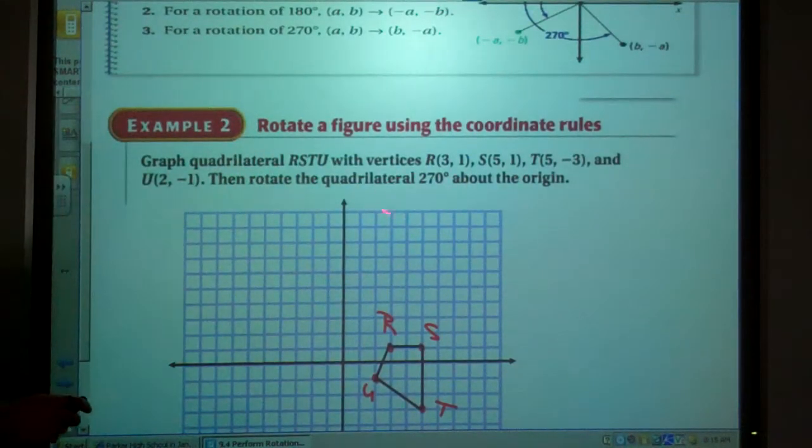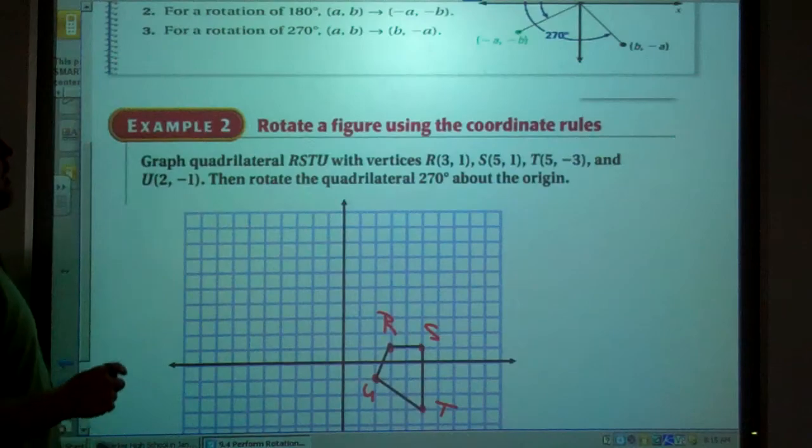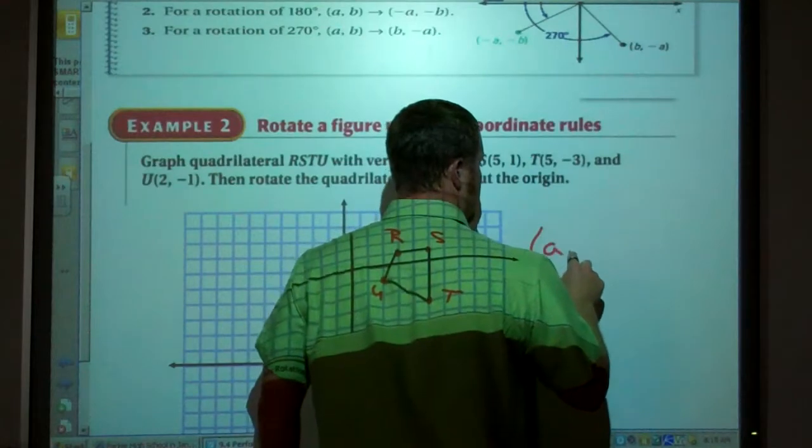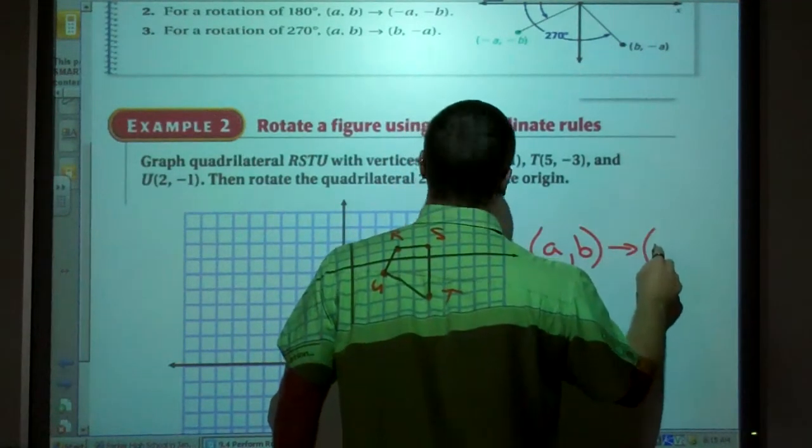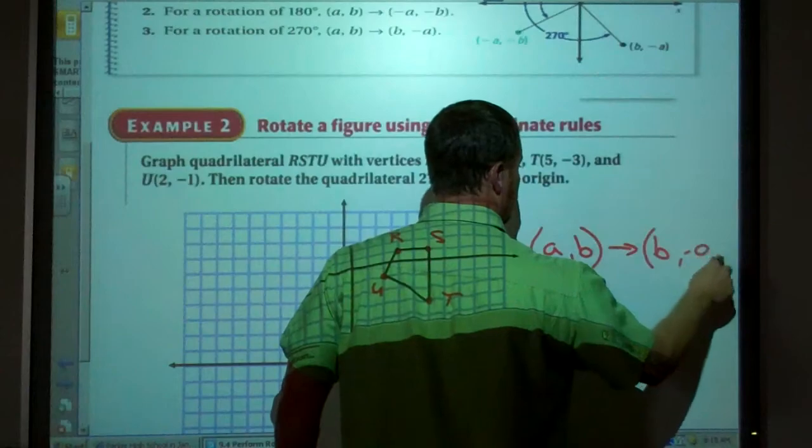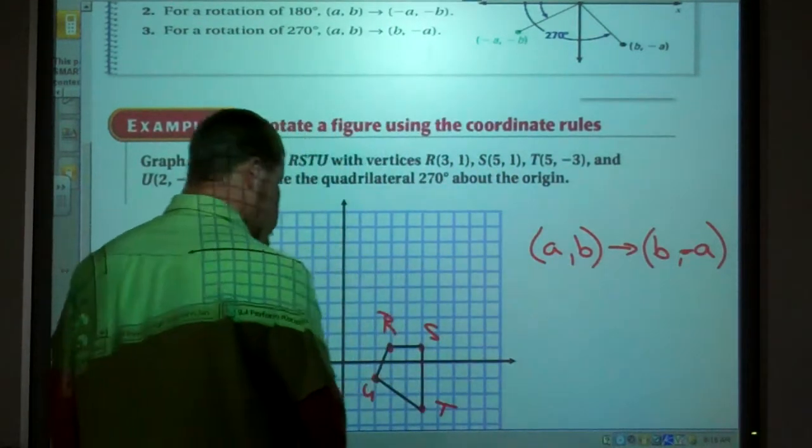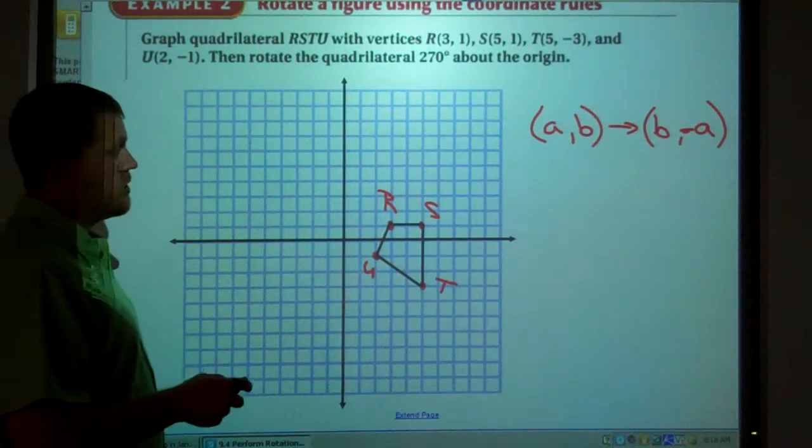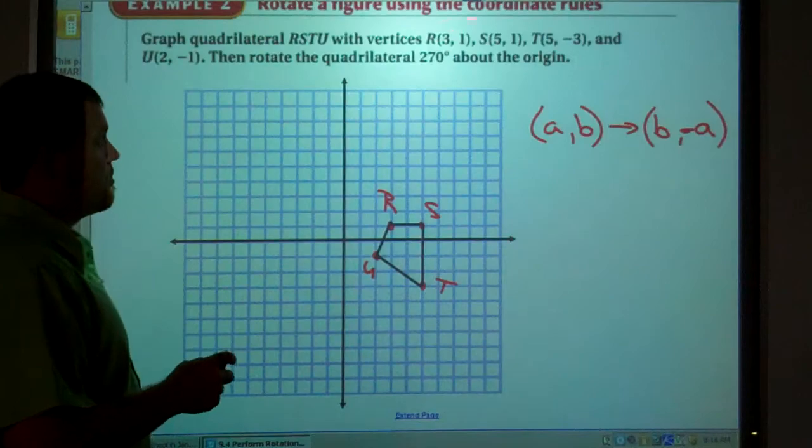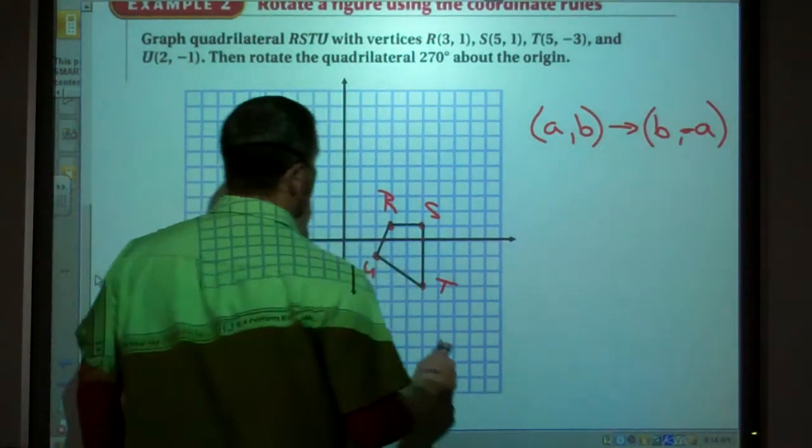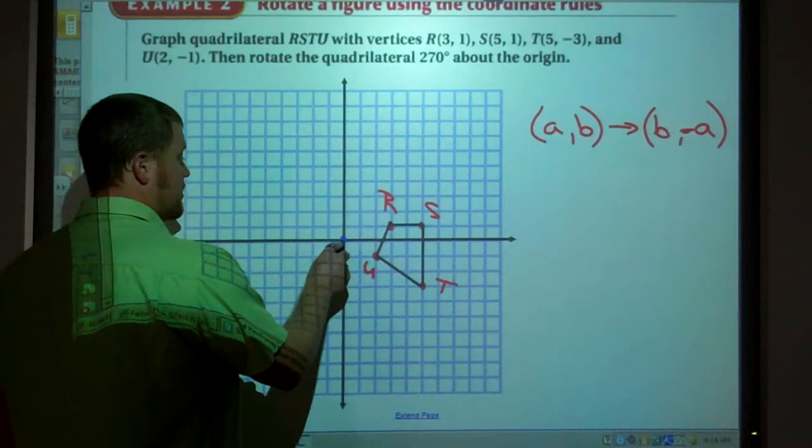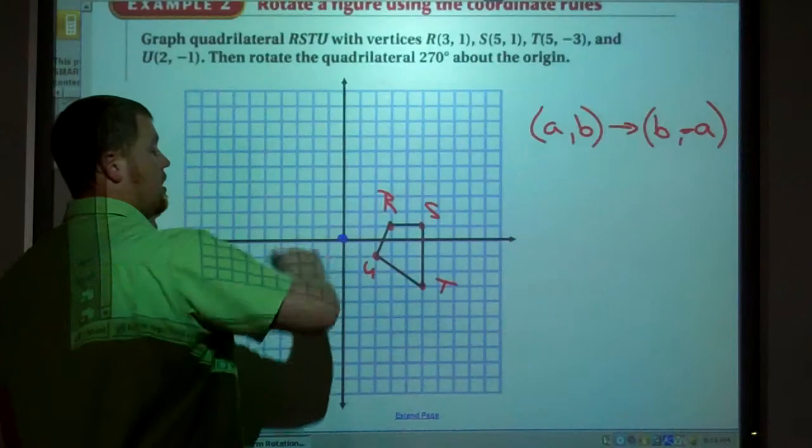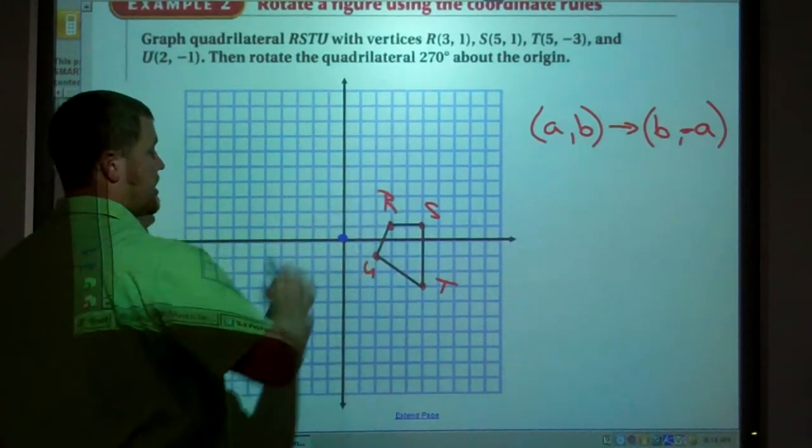Now, I want to rotate it 270 degrees. My 270 degree rotation, the transformation is (a, b) to (b, -a). Or opposite of a. So I'm turning it around that origin there, 270 degrees.